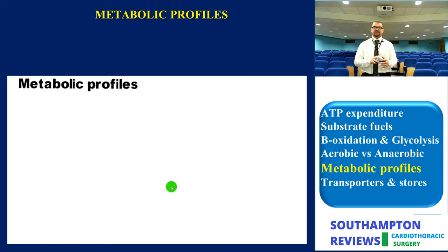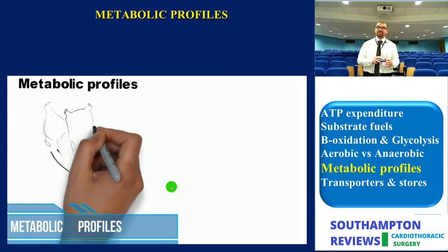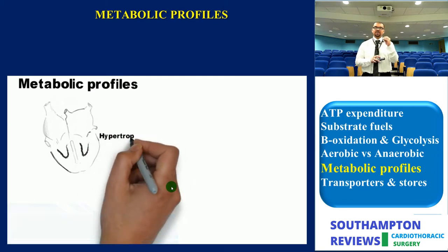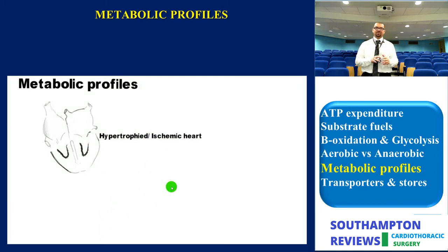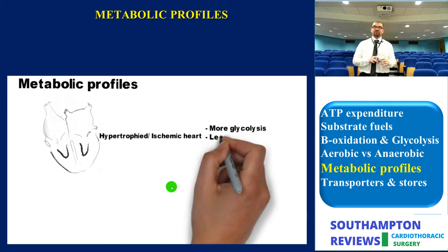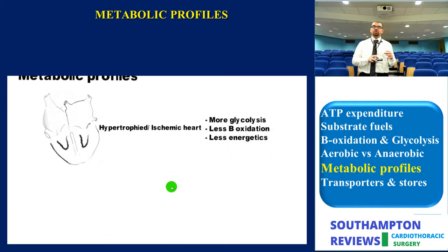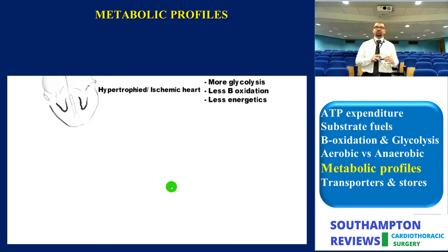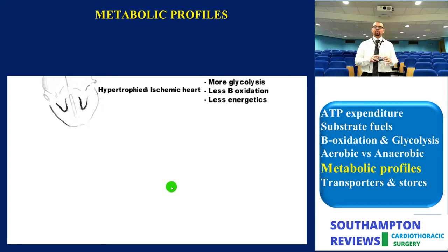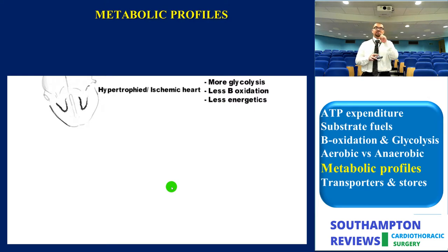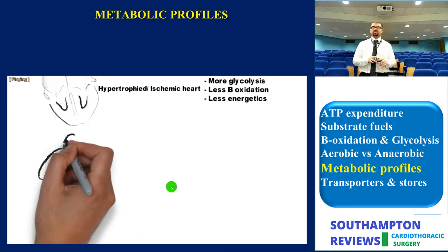Understanding the previous sections enables us to draw a metabolic profile for patients we see every day, allowing us to accurately determine risks and plan myocardial protection and cardiopulmonary bypass strategy. In hypertrophic ischemic hearts, the myocardium relies more on glycolytic pathways, resulting in a chronic state of low energetics and deficient ATP stores. The surgeon might therefore opt for blood cardioplegia, intermittent frequent dosing, delayed pacing, and minimized inotropes after cross-clamp. Many surgeons also use intra-aortic balloon pumps pre-operatively in patients with severe coronary artery disease to protect them during induction of anesthesia.